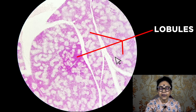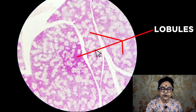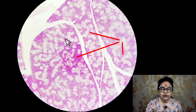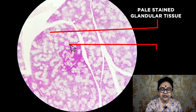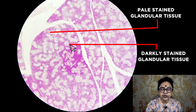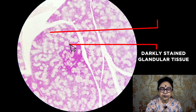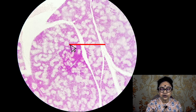Within the lobules you will get two types of glandular tissue: the pale-stained tissue and the darkly-stained glandular tissue. The darkly-stained tissue is the mucous-secreting gland, and the pale-stained tissue is the serous-secreting gland. So this is the mixed salivary gland.